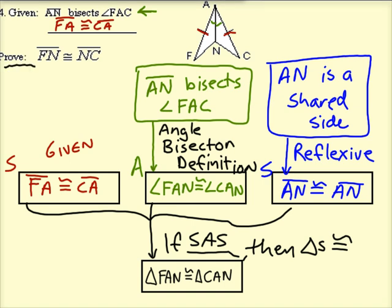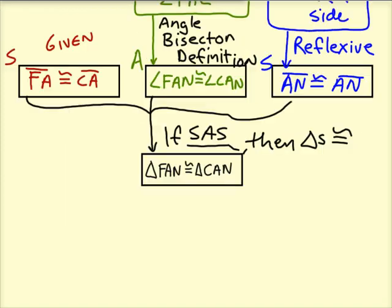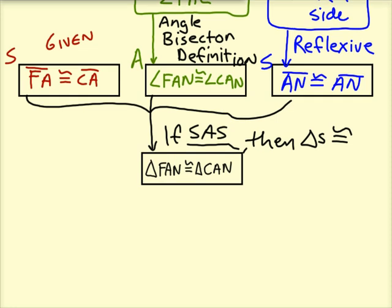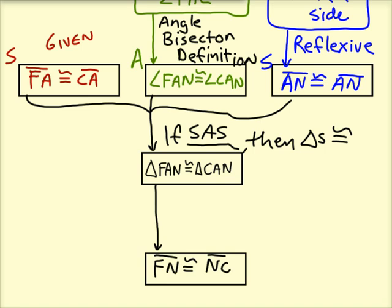We wanted to prove that segments FN and NC, in other words these little segments, are congruent, which we can prove using CPCTC. So here we have established that the two triangles themselves are congruent, and so therefore all of their parts will be congruent as well.